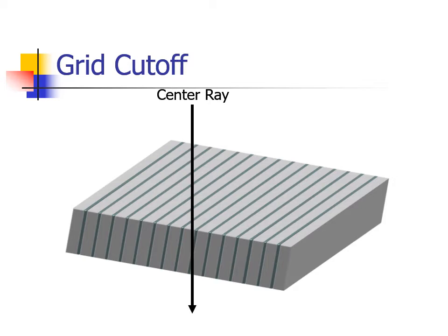Not only this line would be stopped by the grid, all of the primary radiation would be stopped by the lead in the grid as well. If the central ray were angled across the grid, the same thing would happen. This problem is called grid cutoff, where the grid stops the radiation that should normally reach the image receptor.